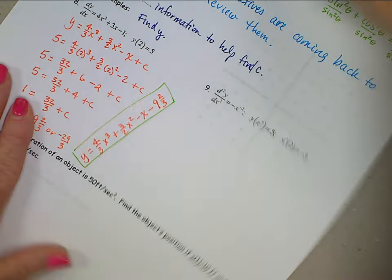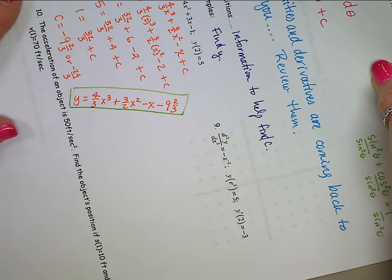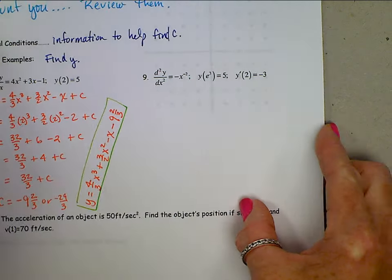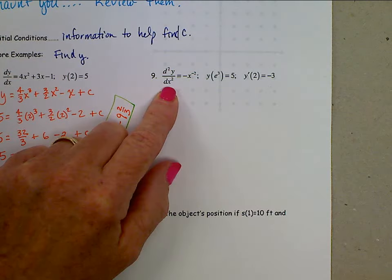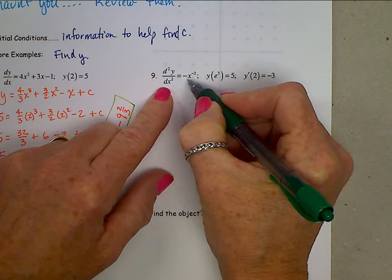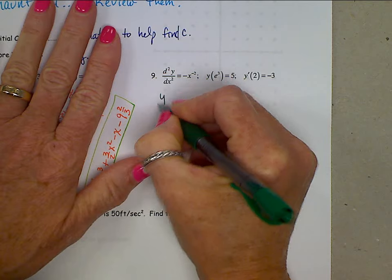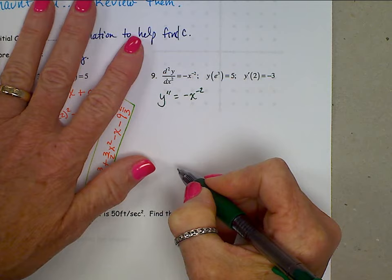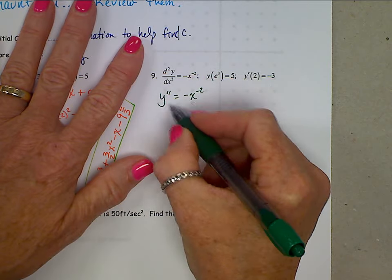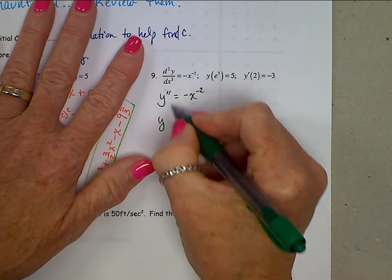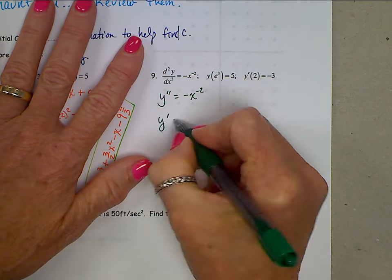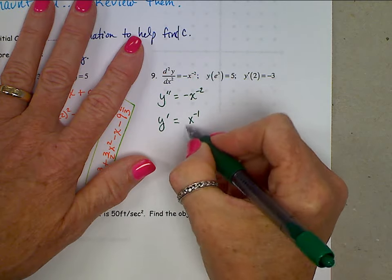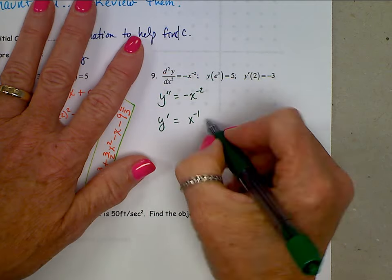Let me turn it right side up for you. All right, moving on to number 9. We recognize this notation of d squared y over dx squared as the second derivative. Write it this way. y double prime is negative x to the negative 2. Do an anti-derivative. The anti-derivative of y double prime is y prime. Add 1 to the exponent here, x to the negative 1. Divide out by that new exponent, and we'll just have x to the negative 1 plus a c.